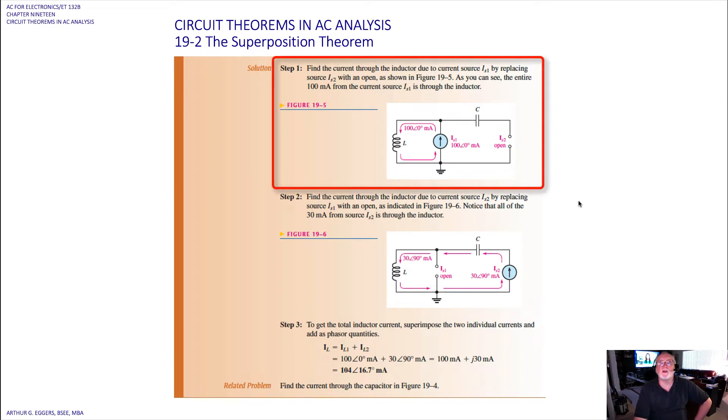So the first thing we're going to find is the current through the inductor due to the current source number one. We're going to replace source number two with an open. So the rules tell us for current sources, open the source. We don't short these with an open.